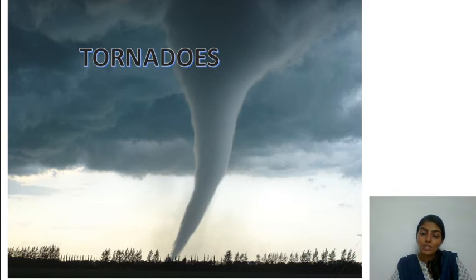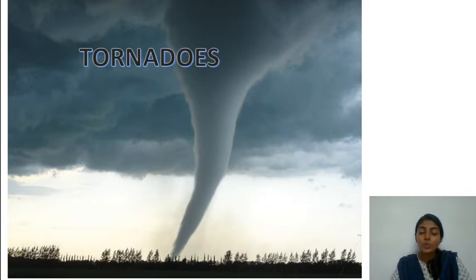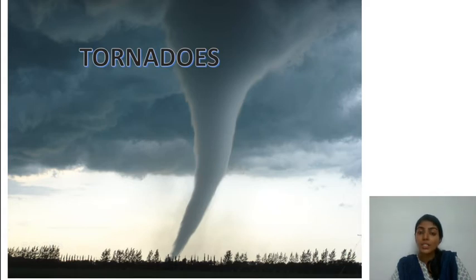The most probable occurrence of tornadoes in India includes states like Assam, West Bengal and adjoining states, as well as Punjab and Haryana. Advanced monitoring of tornadoes is very difficult since they have a very short life period, existing only for a few minutes to a few hours, making it not possible to measure the meteorological parameters associated with them within the available network of meteorological observatories.